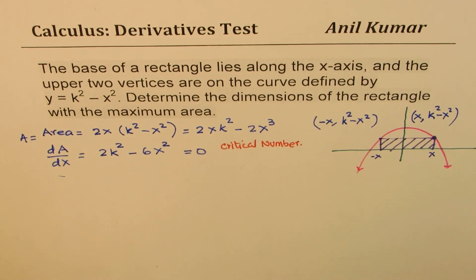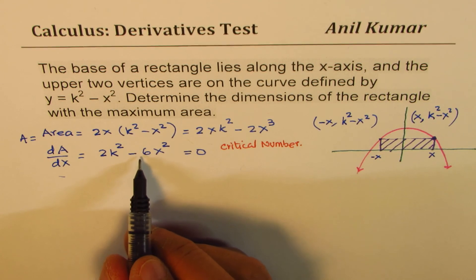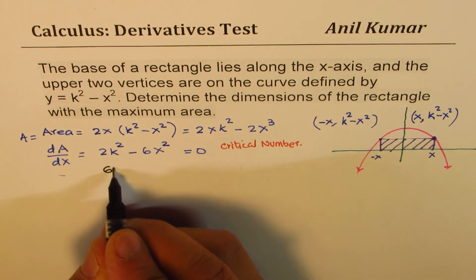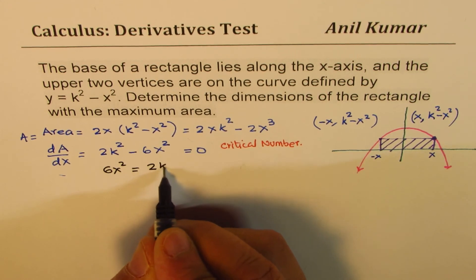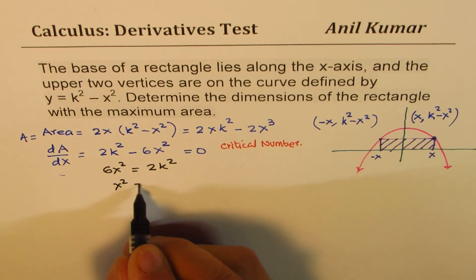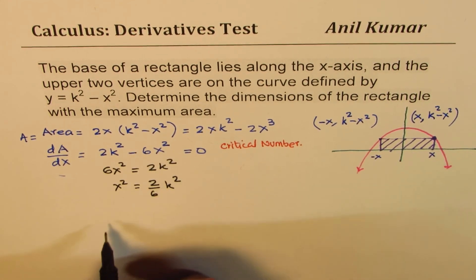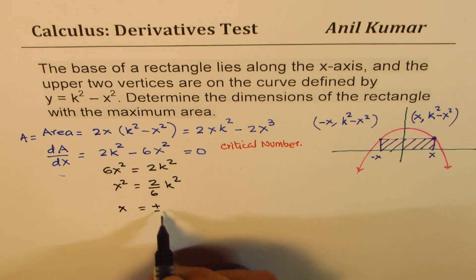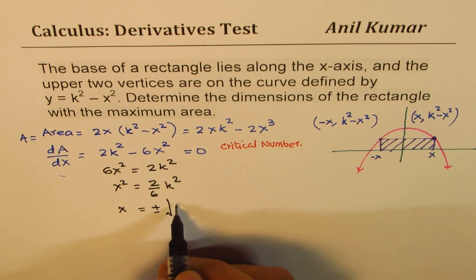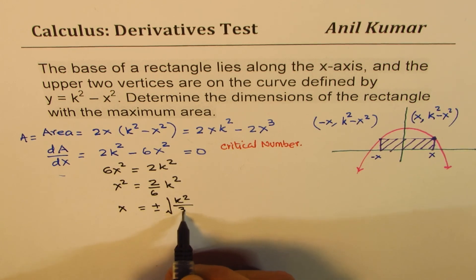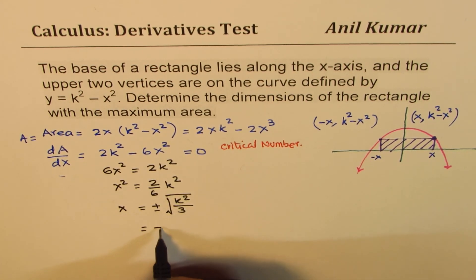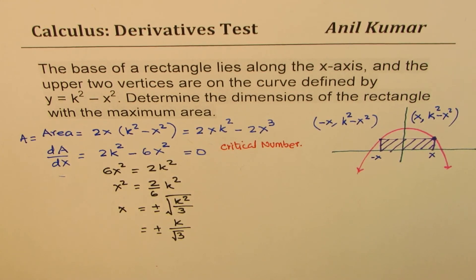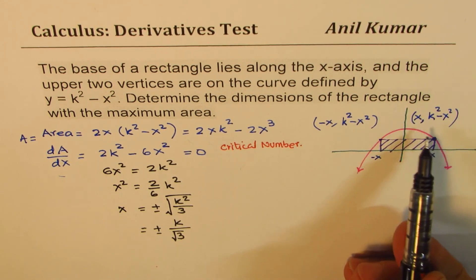So when you equate this to 0, you can solve for x. Taking 6x squared to the other side, we get 6x squared equals to 2k squared. Or let's say x squared is 2 over 6k squared. Or x is equal to plus minus square root of 2 over 6 is 1 over 3. We can write this as k squared over 3, which could be written as plus minus k over square root of 3. So we get the value of x in this particular case. So once you get the value of x, you can actually find the dimensions.